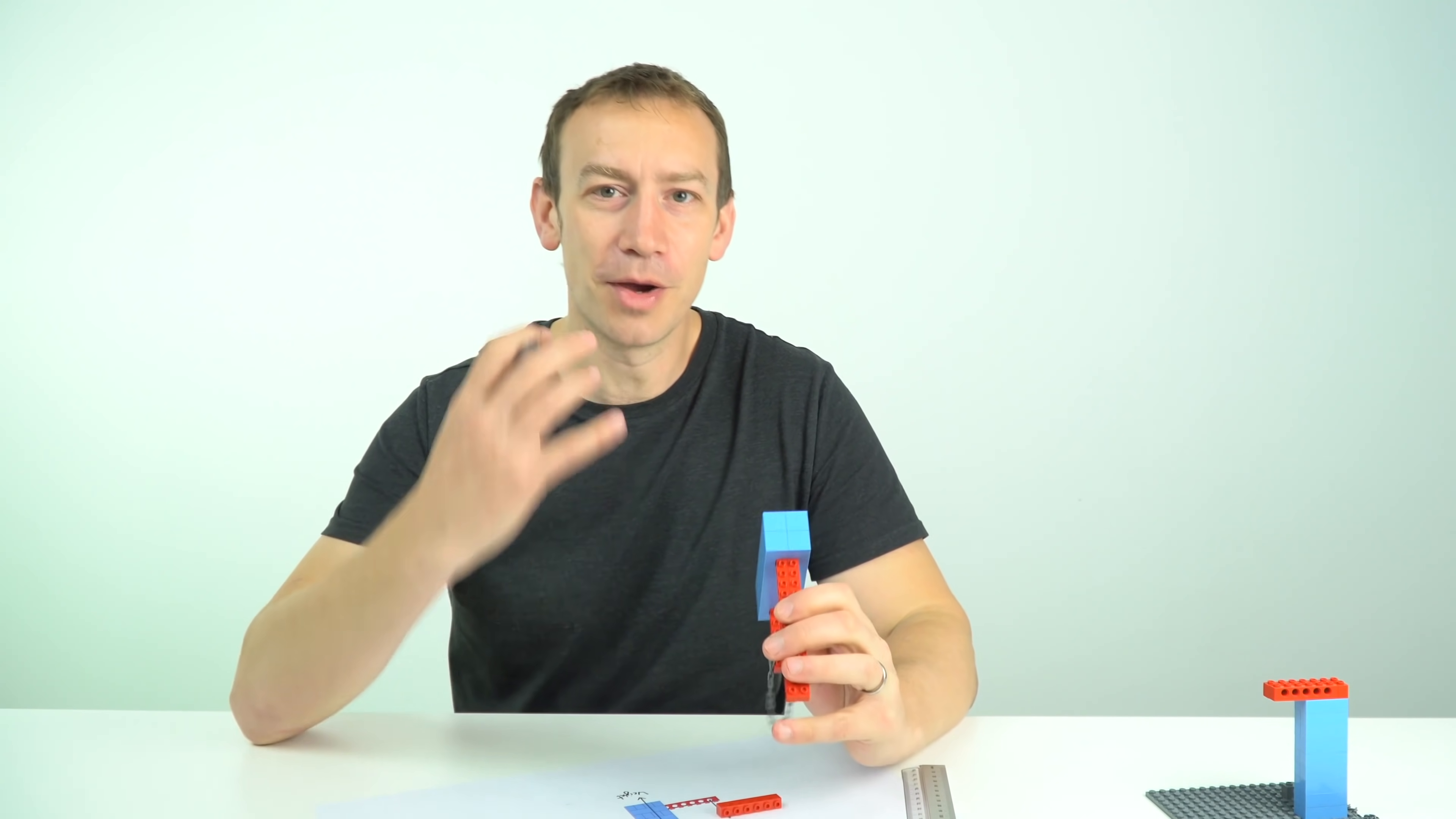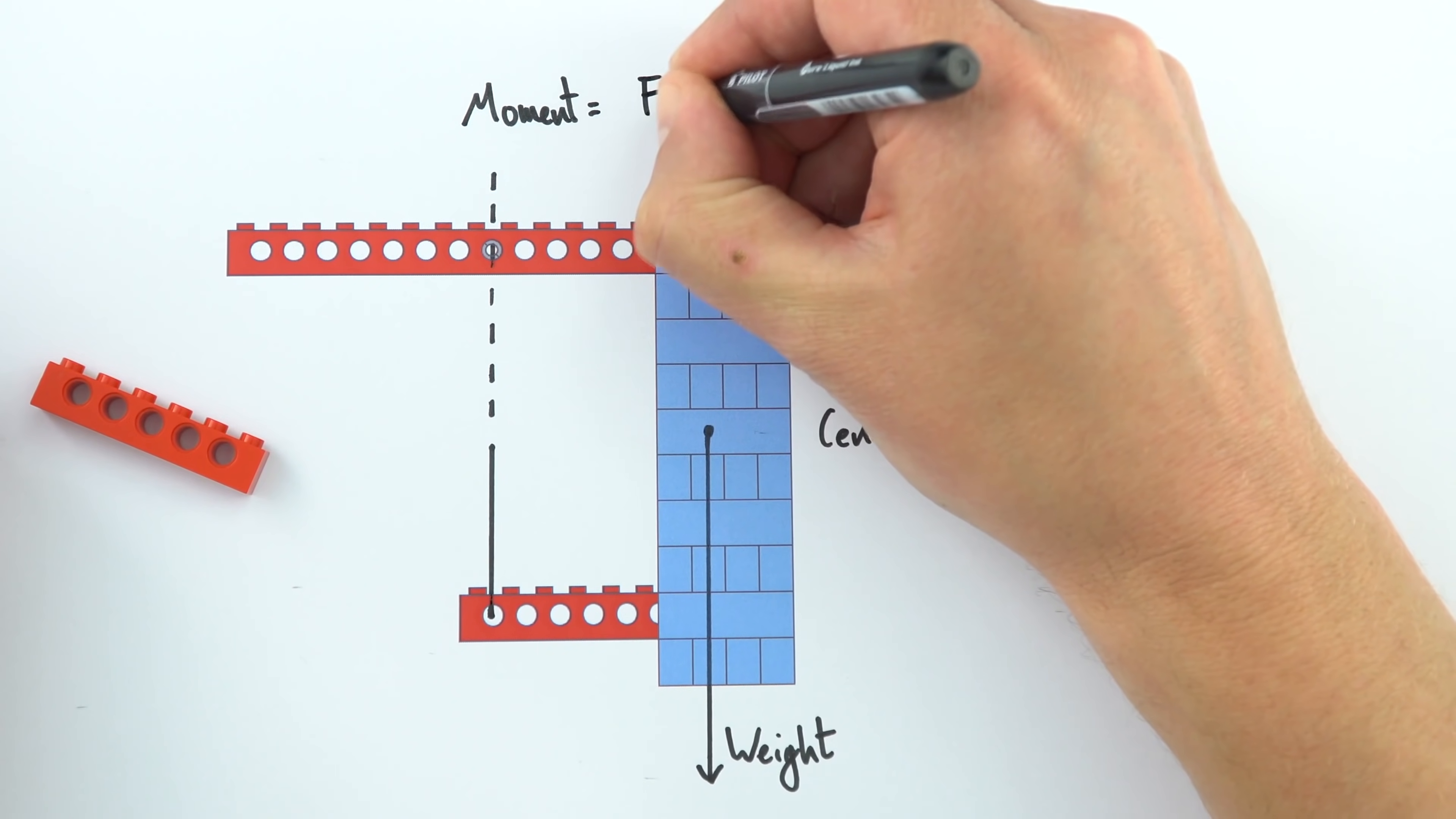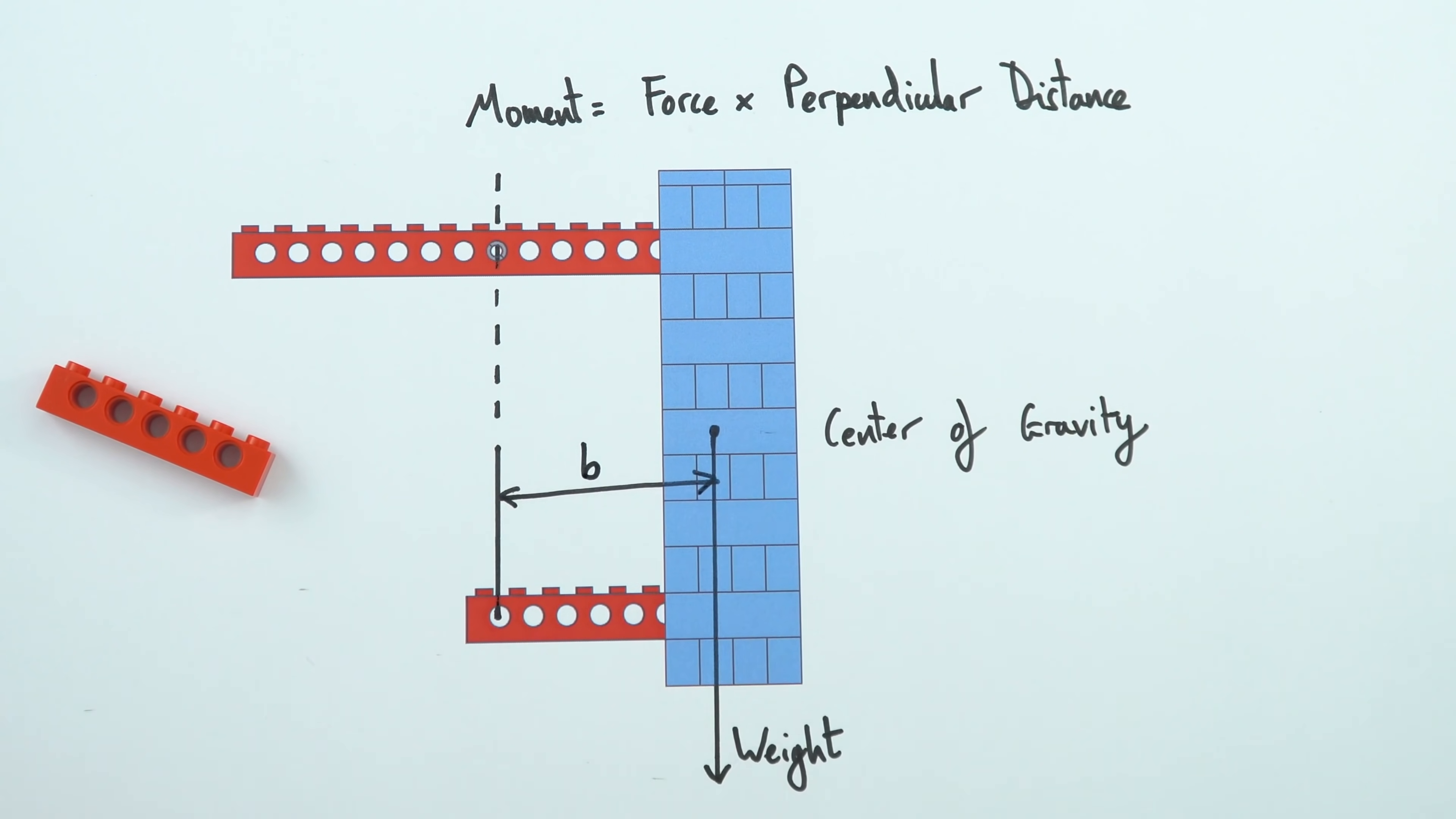Now you might remember that the moment is equal to the turning effect of a force. And the moment is equal to the force times a perpendicular distance from that pivot.